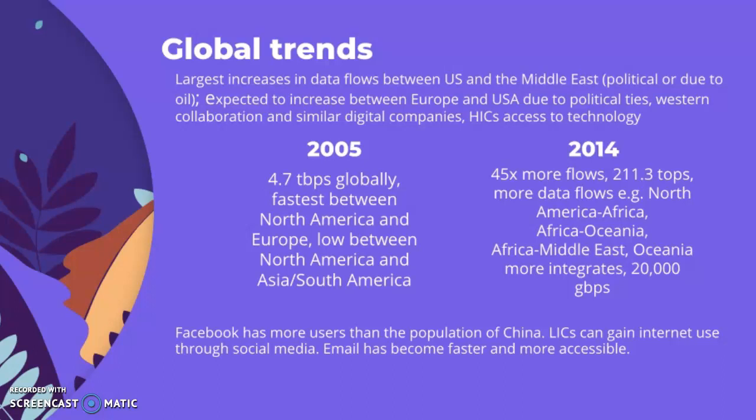Data flows are said to increase in HICs due to greater technology access, though many developing countries are also gaining access. In 2005, 4.7 terabytes per second were sent globally — fastest between North America and Europe, lowest between North America and South America or Asia. By 2014, flows were 45 times faster at 211.3 terabytes per second, with Africa, the Middle East, and Oceania becoming more integrated globally.